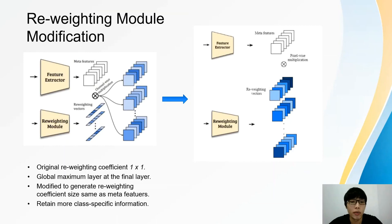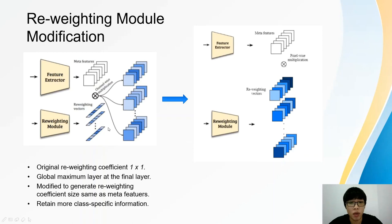Next are the reweighting module modifications. The original size of the reweighting coefficients is 1 × 1, which is generated by a global max pooling layer at the final layer. However, having a global max pooling layer at the final layer may lead to loss of class-specific information, especially in few-shot learning where the new object dataset is limited. Therefore, instead of having 1 × 1 reweighting coefficients, the reweighting module is modified to generate reweighting coefficients which have the same size as the meta features from the feature extractor. The reweighting will be done through pixel-wise multiplications instead of channel-wise multiplications.